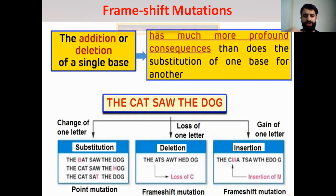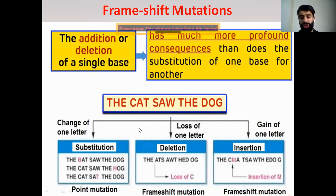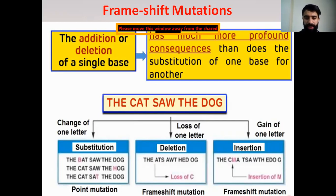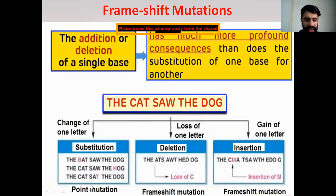Let's use this sentence analogy: 'The cat, so the duck.' If you substitute one of the letters — for example, C is substituted by B, so it becomes 'the bat, so the duck' — a change of one letter by substitution or point mutation will not change the whole meaning. Or if you change D with H, it becomes 'the cat, so the huck.' Or if it changes W with T, 'the cat, sand the duck' — it still has a meaning, but not 100% complete.